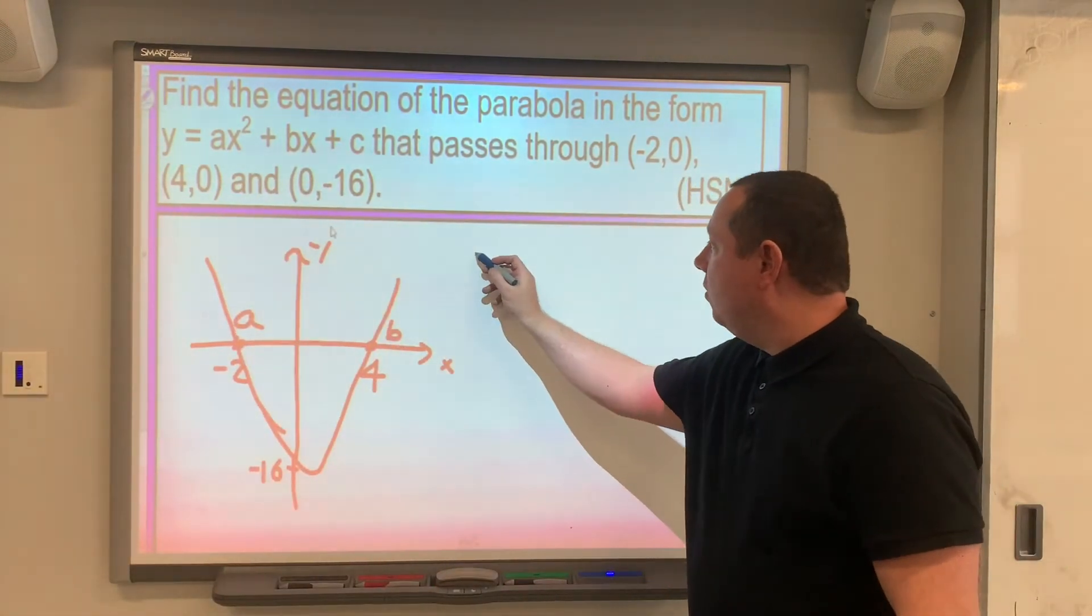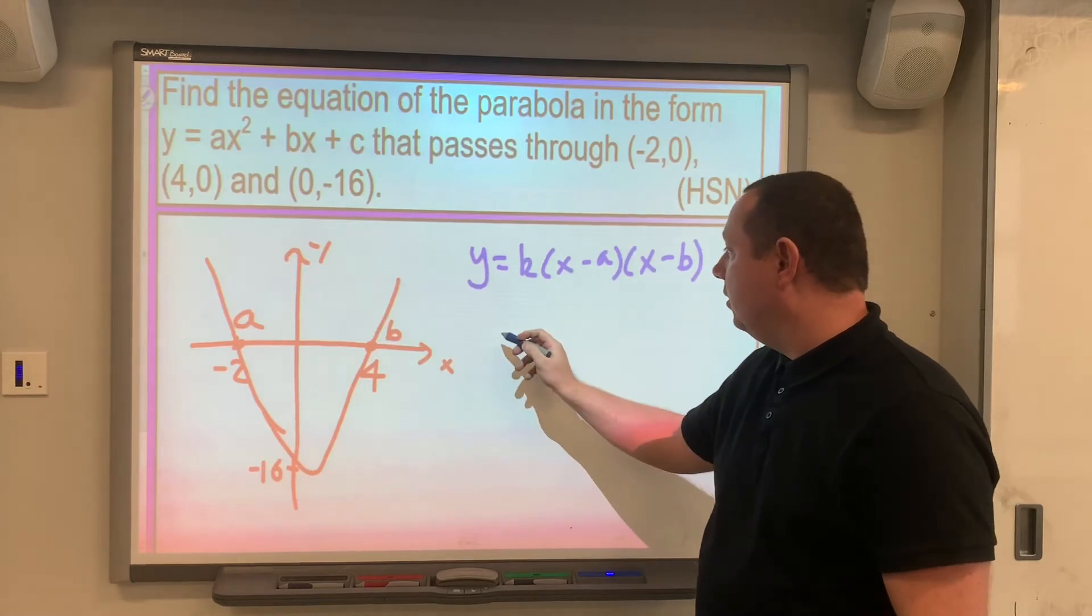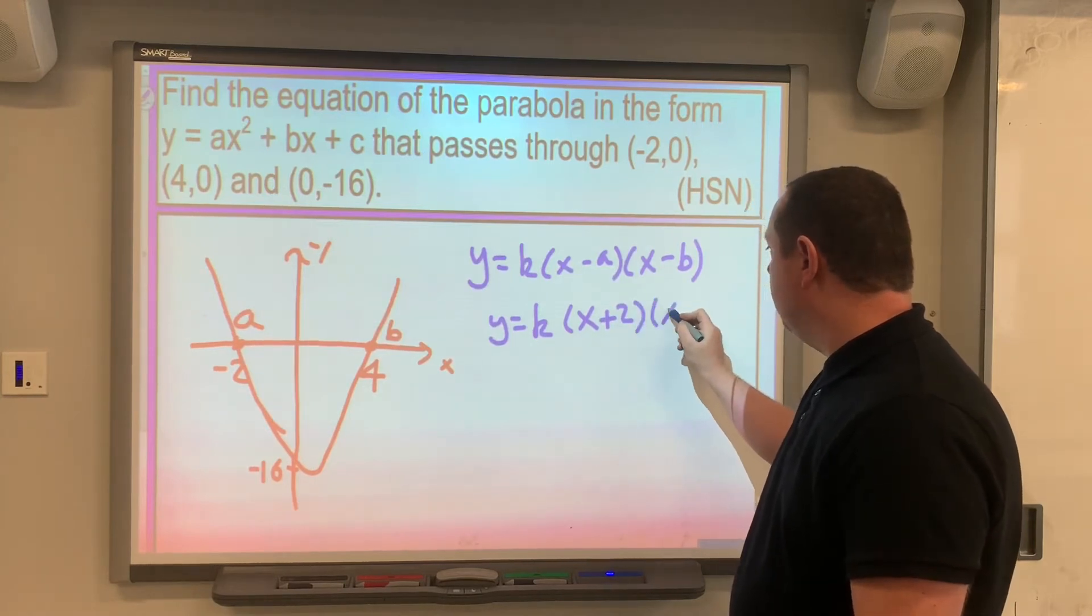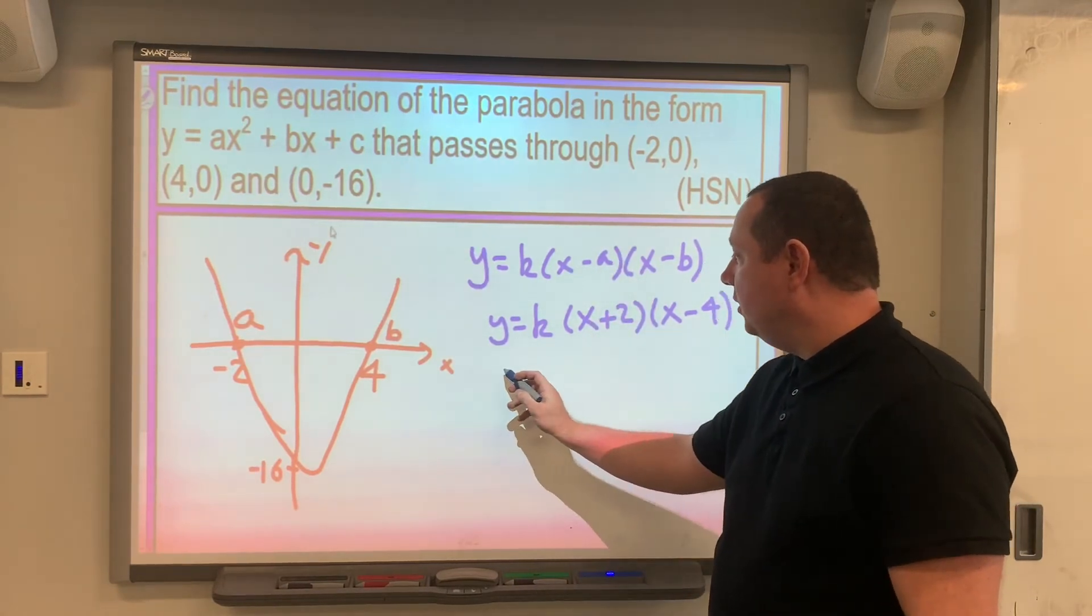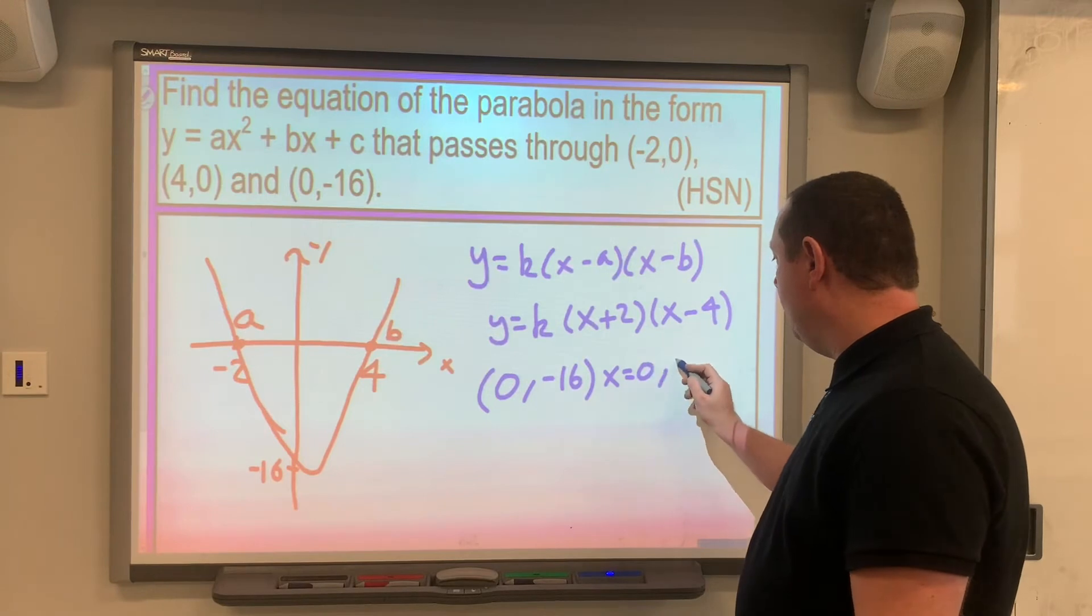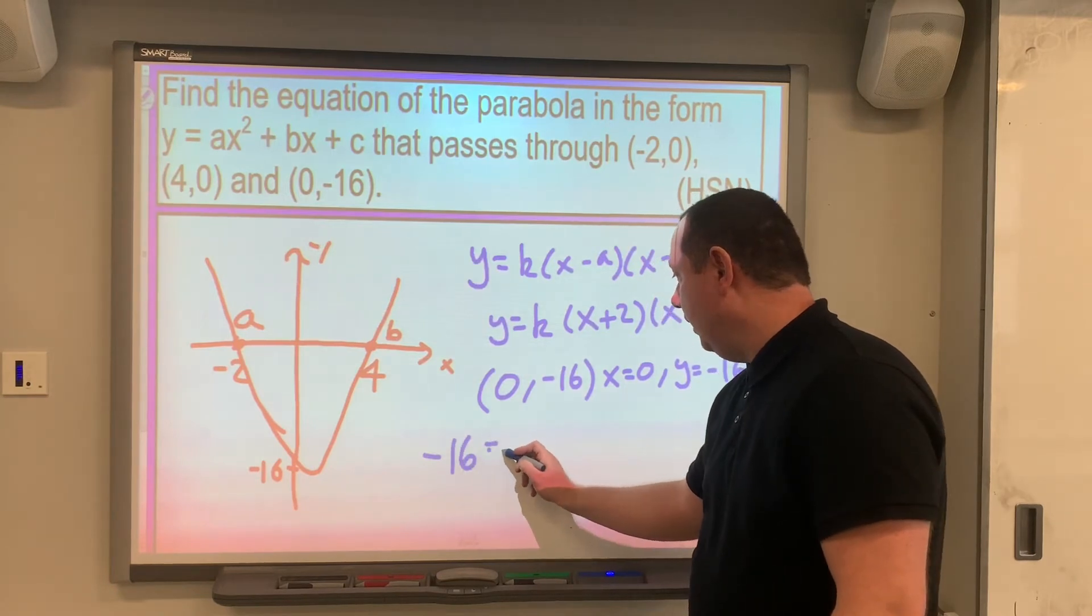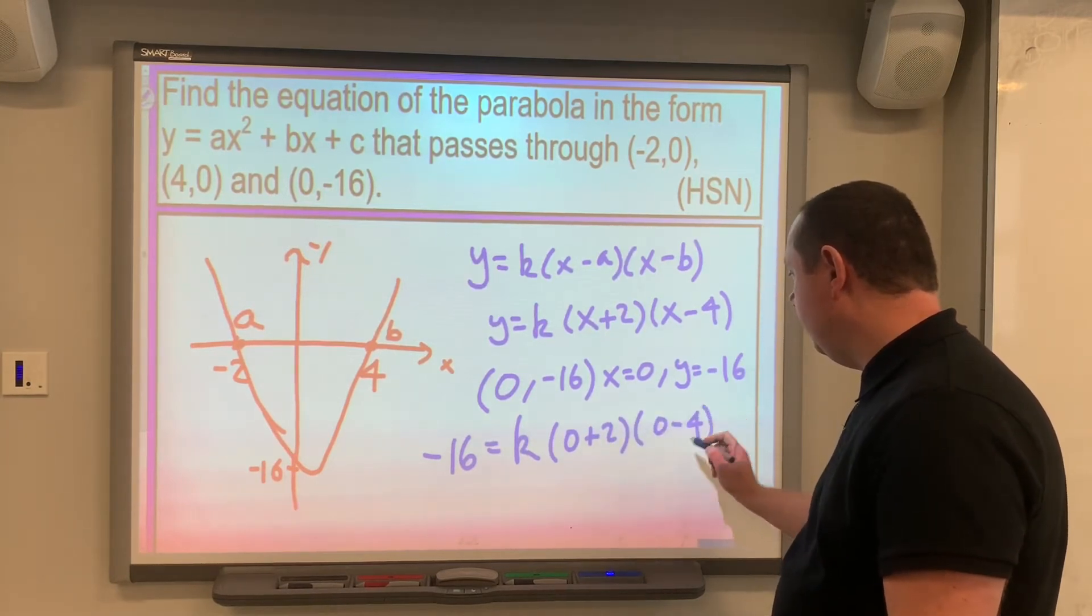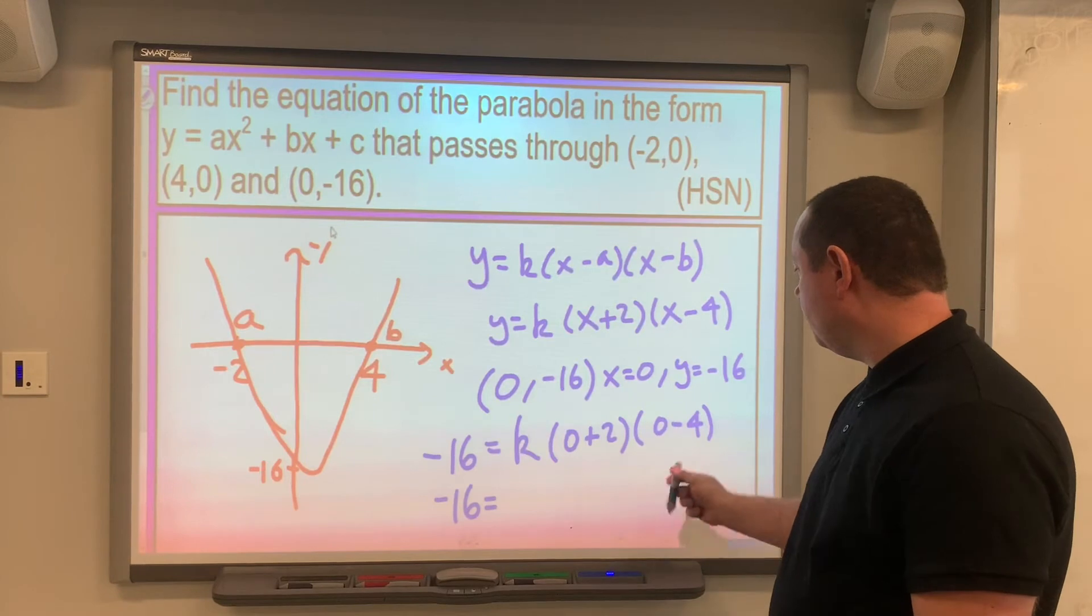Starting off the same way: y equals k(x minus a)(x minus b), because a and b are roots. So y must equal k(x plus 2)(x minus 4). Notice it's turned to plus because it's minus (-2), which is plus 2. Now, same again as the last time, using the point (0,-16), when x is 0, y is -16. We'll substitute this in, so we get -16 equals k(0 plus 2)(0 minus 4). -16 must equal 2 times -4, which is -8k.